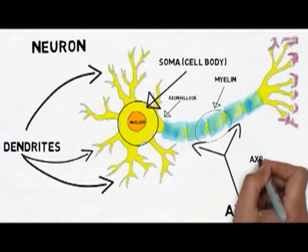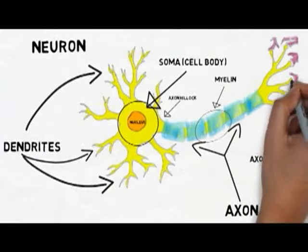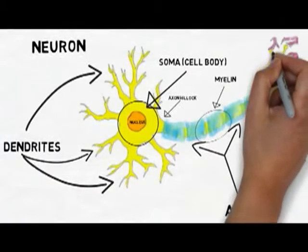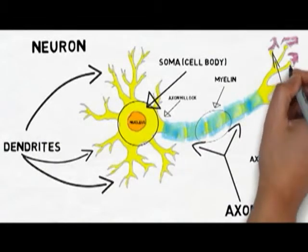The last step for the action potential is the axon terminals, also known as synaptic buttons. When the signal reaches the axon terminals, it can cause the release of neurotransmitter.